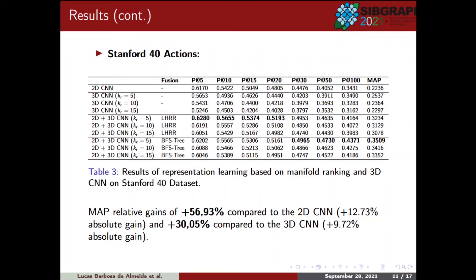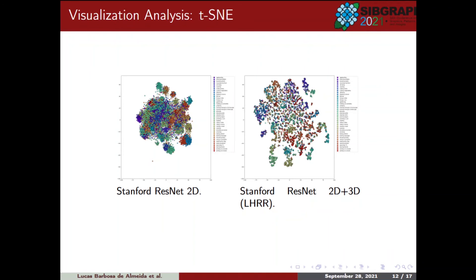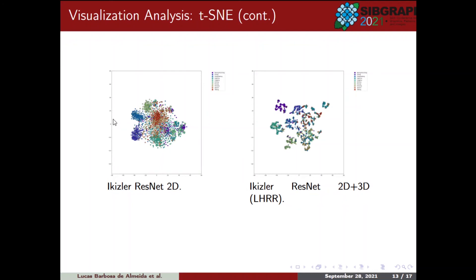As we can see, in our datasets the scenario considering 5 neighbors obtained the best results, so we will use it in the visual analysis of performance. In order to enrich the discussion on the proposed approach, we employ dimensionality reduction methods, more specifically t-SNE. For each dataset, the distance obtained from the features of the 2D model is presented, followed by our approach. As we can see in the representations, the approach based on ranking fusion resulted in better separability of classes for all scenarios, resulting in better retrieval efficiency.